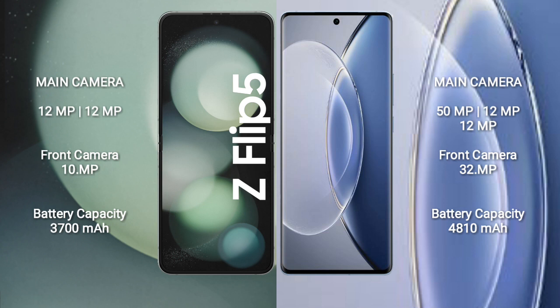Samsung Galaxy Z Flip 5 features a rear dual-camera setup of 12 MP plus 12 MP, and a 10 MP front camera. Vivo X90 features a rear triple-camera setup of 50 MP plus 12 MP plus 12 MP, and a 32 MP front camera.